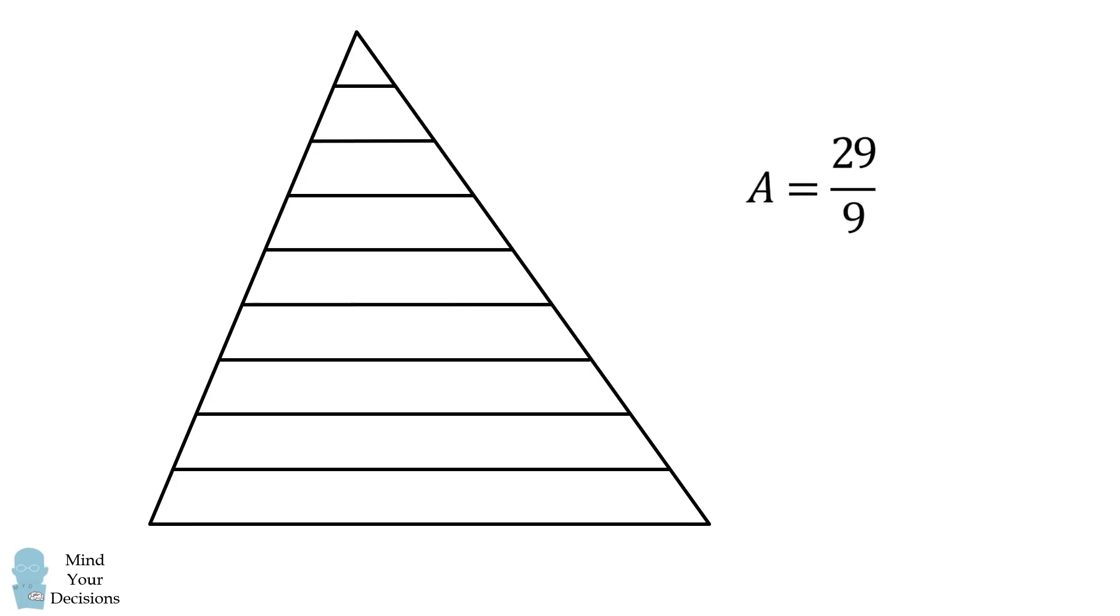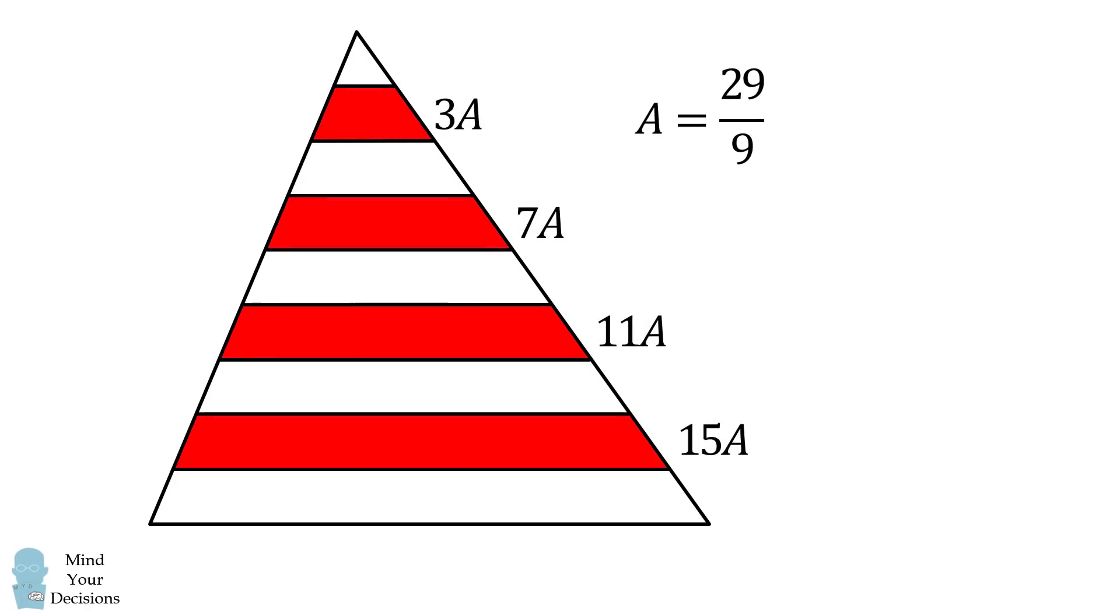From here, we can focus on the area of the red stripes. The total area will be 3A plus 7A plus 11A plus 15A, which is equal to exactly 36A. We substitute in for A, multiply it by 36, and we get this is equal to 116.